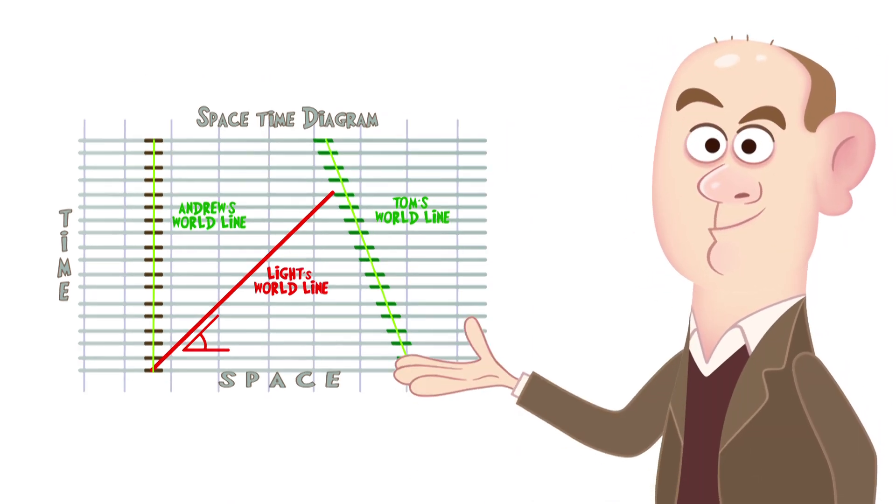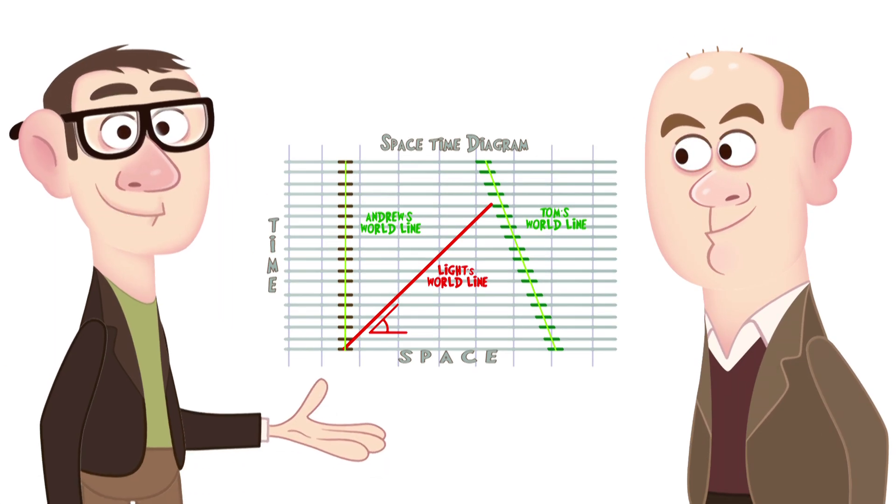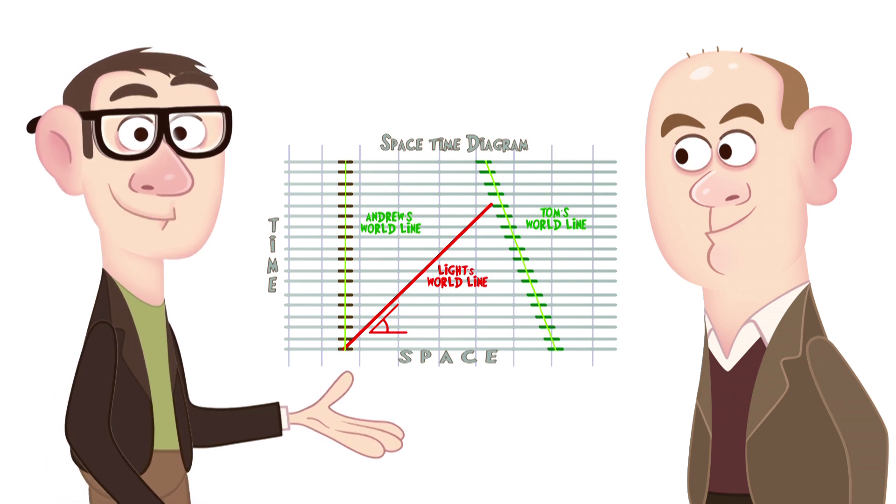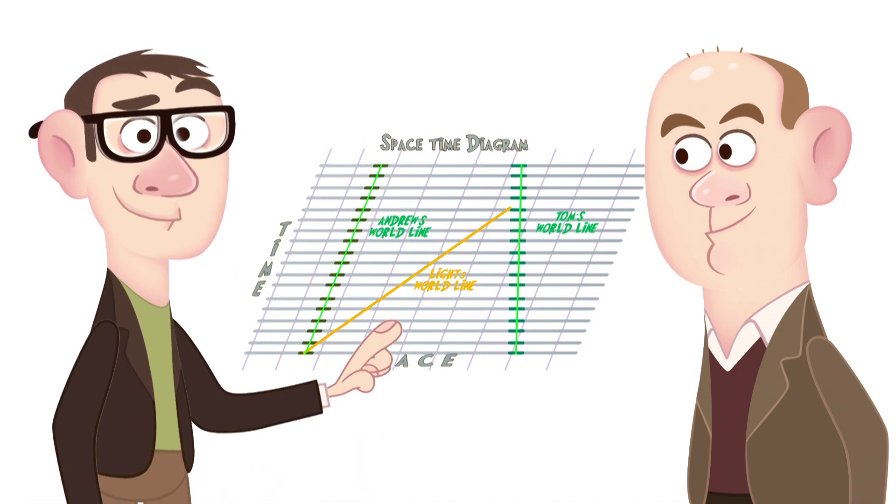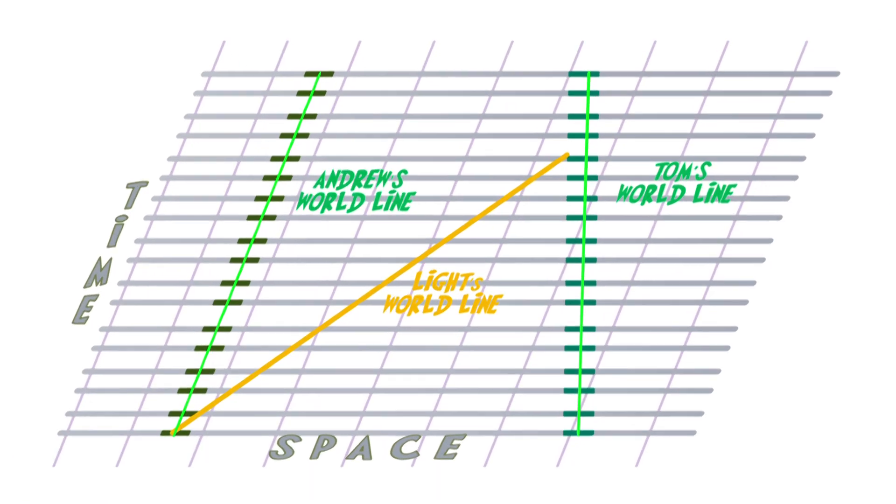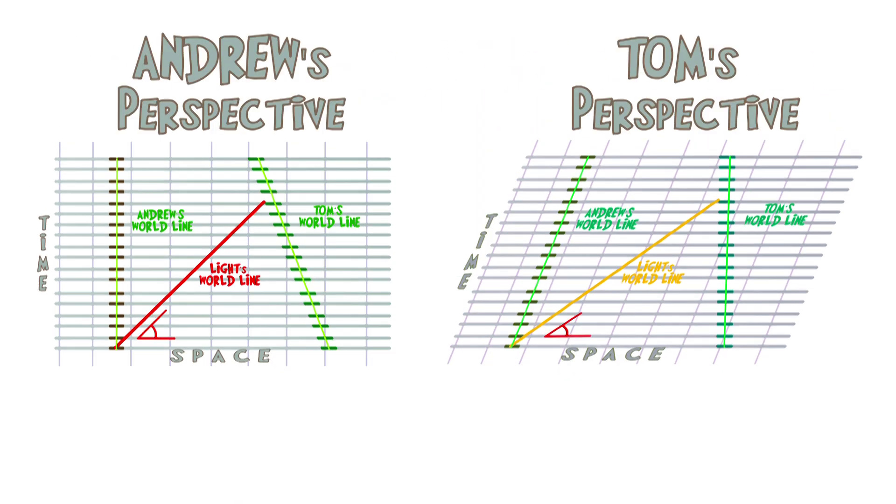But that spacetime diagram represents Andrew's perspective. What does it look like to me? In the last lesson we showed how to get Tom's perspective, moving all the panels along a bit until his world line is completely vertical. But look carefully at the light world line—the rearrangement of the panels means it's now tilted over too far. I'd measure light traveling faster than Andrew would.